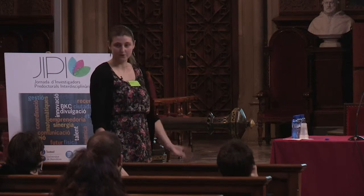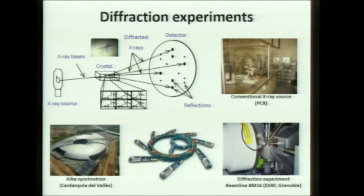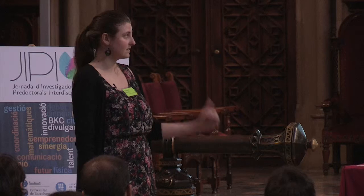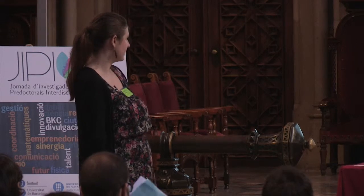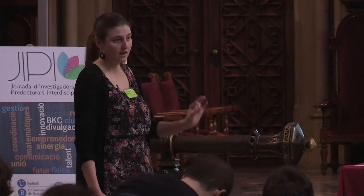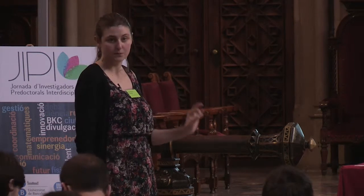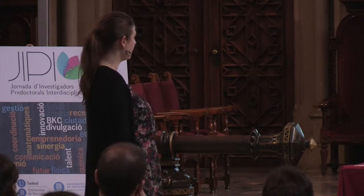Once we have a crystal of our protein of interest, we have to perform the diffraction experiment. To do that, we need an X-ray source — a device which is able to produce an X-ray beam that will collide with our crystal. This protein crystal is going to produce some diffracted X-rays that we can collect using a detector, and they look like spots. Each spot corresponds to a different reflection.